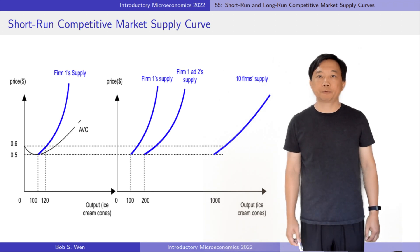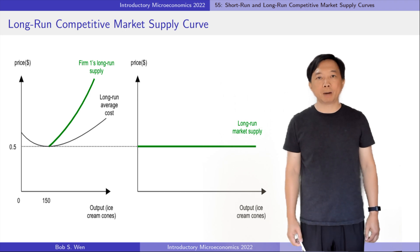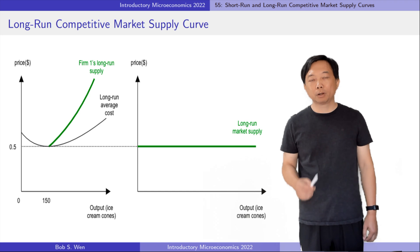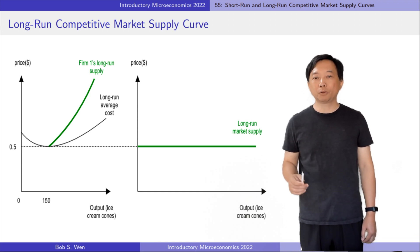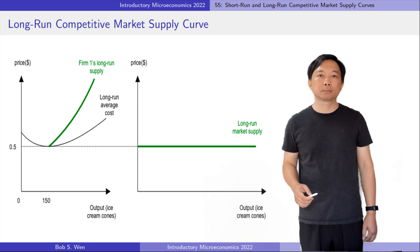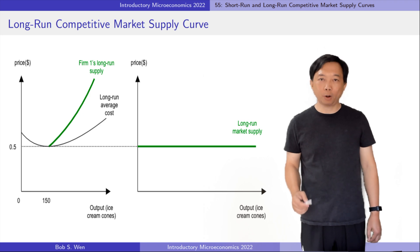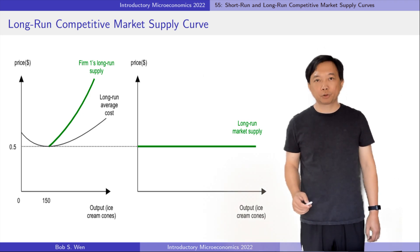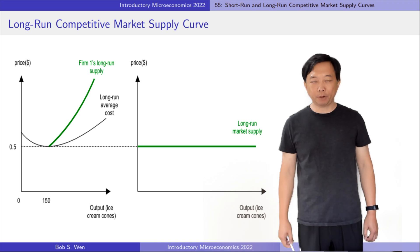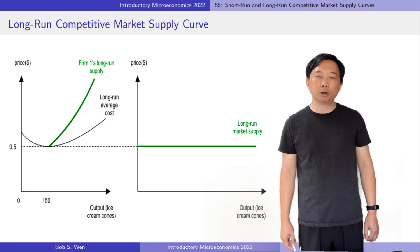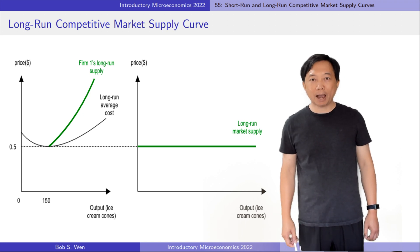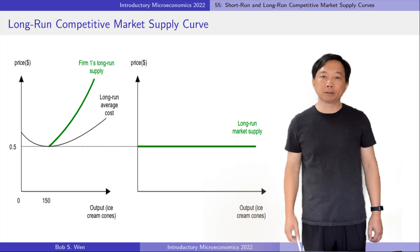Now consider what happens if firms are able to enter the market in the long run. A single firm's long run supply curve is its long run marginal cost curve above the minimum of its long run average total cost. Suppose the market price is greater than the firm's long run average total cost — the ice cream firm makes a positive profit. New firms have an incentive to enter the ice cream market. This entry will expand the number of ice cream firms, increase the quantity of ice cream cones, and drive down the ice cream price and profit until the firms are making zero economic profit.